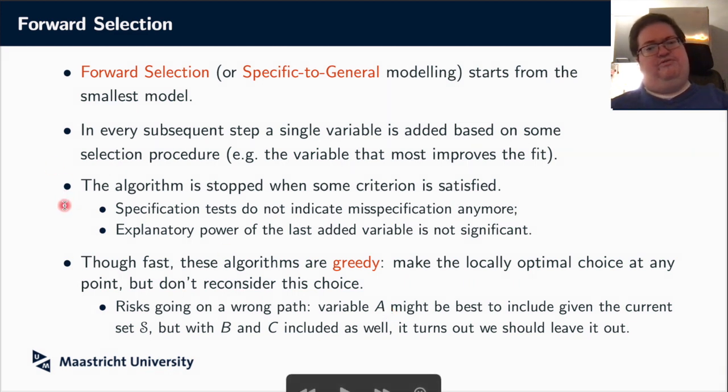So can we do differently? Can we do something which is less computationally intensive? So that's one of the ideas behind forward selection. So you start from a small model, say intercept only, or maybe you include some variables that you definitely want to be in your model. And then you're going to add variables to that model. Now, what you then do is in every step, you're going to include a single variable. So you have some sort of selection procedure, how do you choose that variable? For instance, you take the variable that most improves the fit.